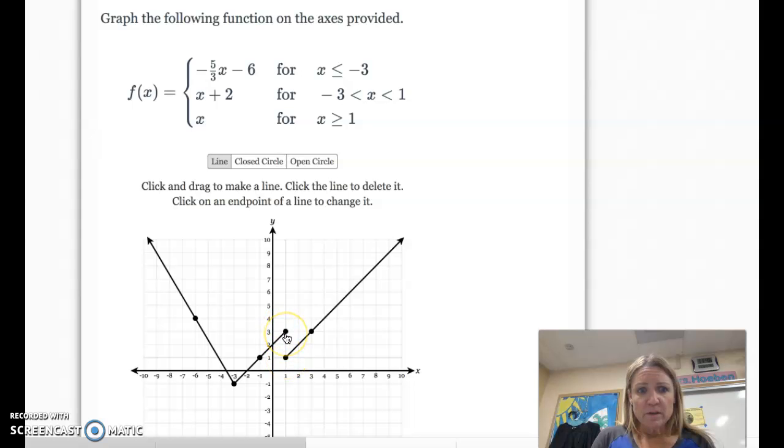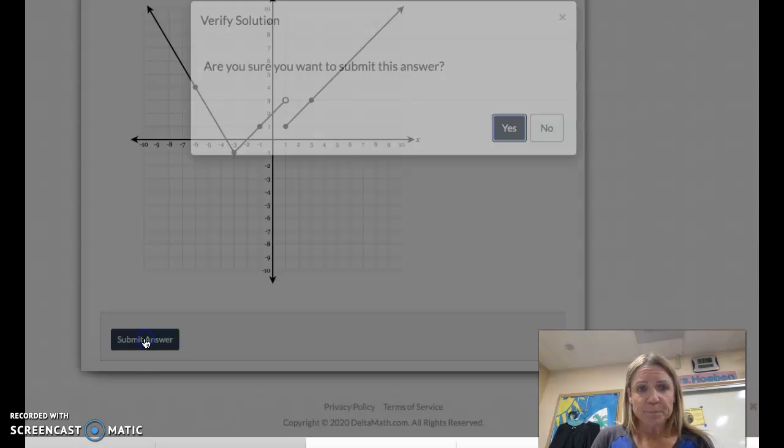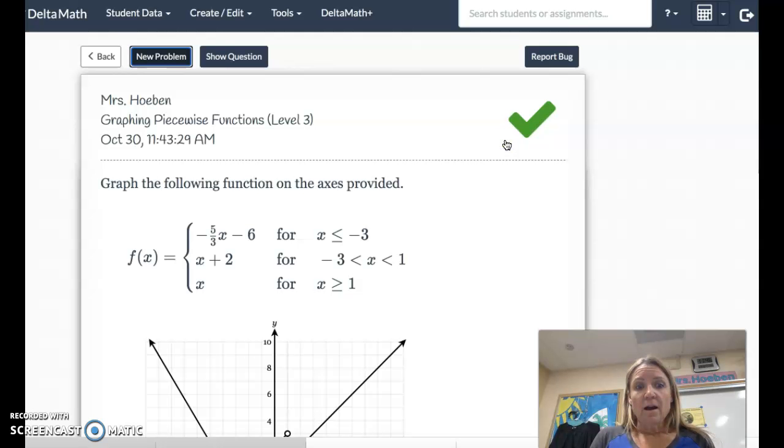That should have the equal part. So that point should be filled in. Did I mess up this one? Let me check. So at 1, it doesn't have the equal part. So I need an open circle right there. Okay. All right. Fix that up. And let's check it. All right. It likes it. All right. Thank you.